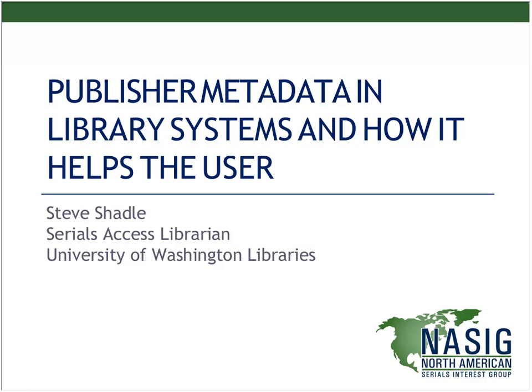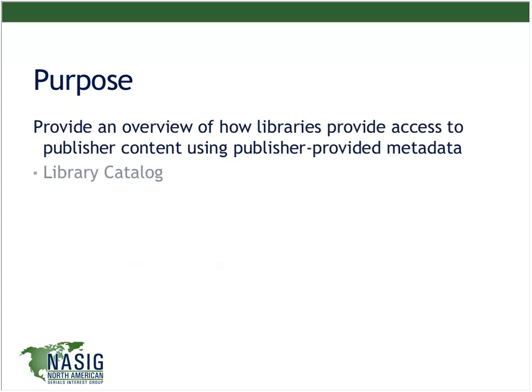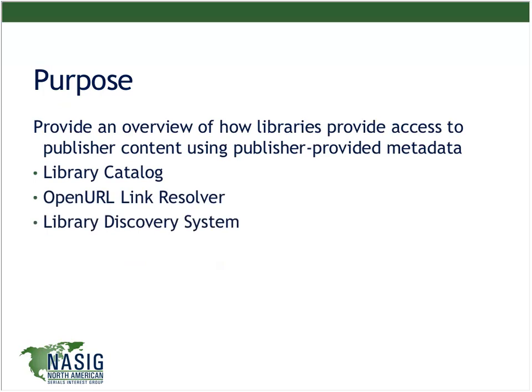So, what we're going to be talking about for the next 45 minutes or so: I would like to provide an overview of how libraries provide access to publisher content using publisher-provided metadata. There are three systems that libraries tend to use mostly when providing access to licensed e-content. They use the library catalog — the traditional library catalog — open URL link resolvers, and discovery systems. I do have a couple of spots during the presentation where I'll be asking for questions, so if you want to go ahead and put your questions in the Q&A, we'll cover them at that point.